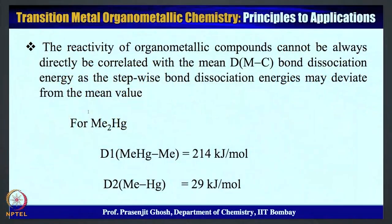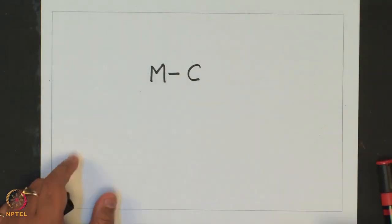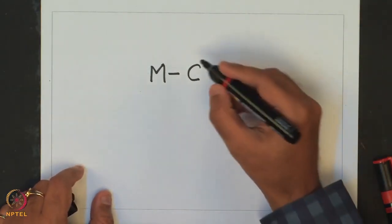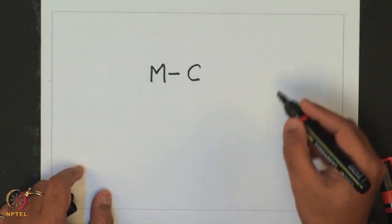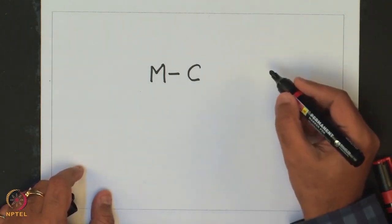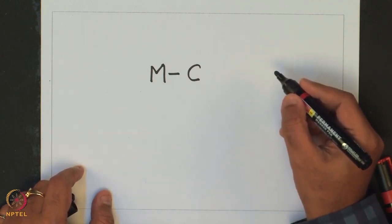That can be gauged by looking at the bond energy of organometallic compounds. The bond energy of organometallic compounds depends on the strength of the metal-carbon bonds. Metal-carbon bonds are weaker than that of the metal-oxygen, metal-nitrogen, metal-halide, or other metal-heteroatom bonds.